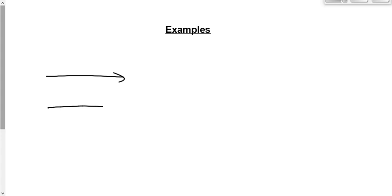Let's do a couple of examples. In the first situation, we have a magnetic field pointing towards the right-hand side of the page. What caused that magnetic field? It doesn't really matter — it could be a bar magnet, the Earth's magnetic field, or an electromagnet. This is an external magnetic field caused by something. We're also going to have a negatively charged particle moving down toward the bottom of the page. What's the direction of the magnetic force? You use the hand rule for deflection — the hand rule for deflection is used when you have an external magnetic field and a force somewhere in the mix.